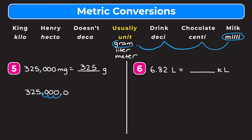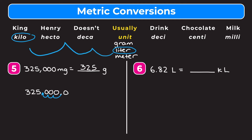In example six, we have 6.82 liters and we want to go to kiloliters. Starting at liters and going to kilo, we have to move one, two, three places to the left. Rewriting 6.82 and moving the decimal point three places to the left, filling in the missing spots with zeros, we get that 6.82 liters is equal to 0.00682 kiloliters.